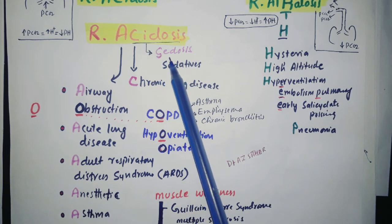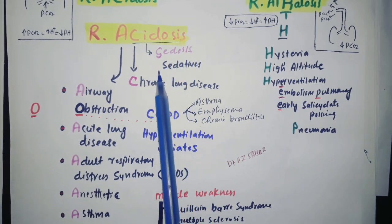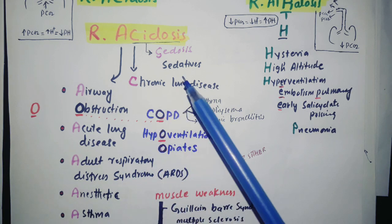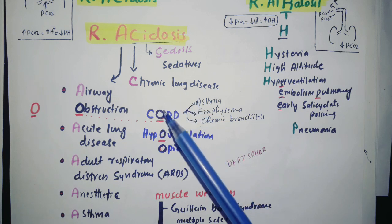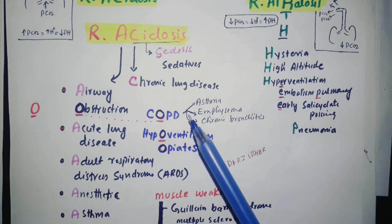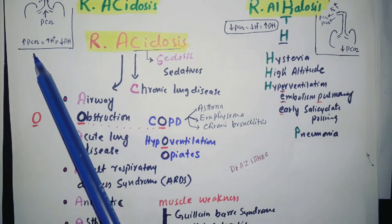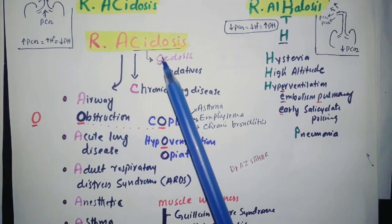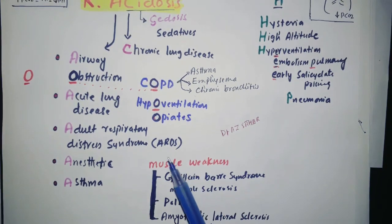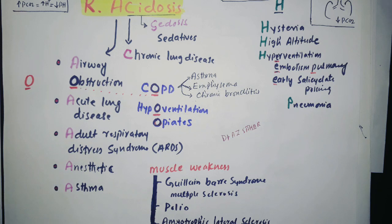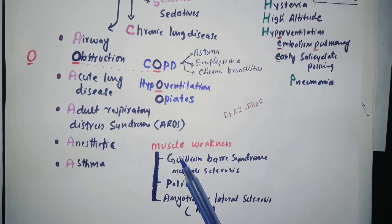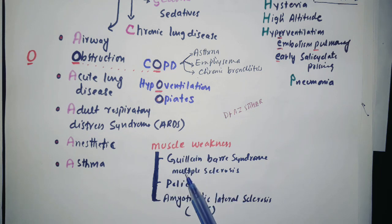Acidosis can also sound like 'C-dosis,' representing sedative medications. Barbiturates and benzodiazepines depress the medullary respiratory center, decreasing respiratory rate so CO2 cannot be expelled — leading to acidosis. Muscle weakness also causes respiratory acidosis, as seen in Guillain-Barré syndrome, multiple sclerosis, polio, and amyotrophic lateral sclerosis.